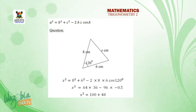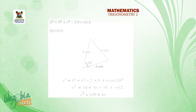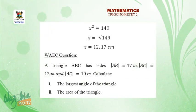So times minus 0.5. So by the time we do that, 64 plus 36 will give us 100. So when you multiply minus 96 by minus 0.5, it will give us 48. When you add that, we have 148. And then we are looking for X. So X will be the square root of 148, which is 12.7 cm.